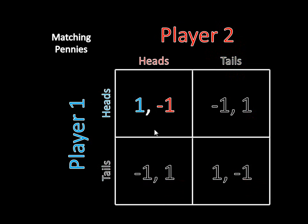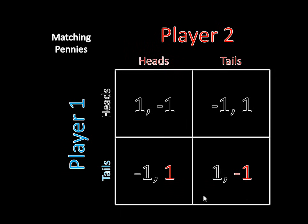Can heads-heads be a Nash Equilibrium? The answer is no. Consider Player 2's deviation: if Player 2 knows that Player 1 is playing heads, she doesn't want to play heads — she's going to want to switch over to tails. So this can't be a Nash Equilibrium. Can heads-tails be a Nash Equilibrium? No, for the opposite reason. Now Player 1 would want to switch his strategy, because if he knows that Player 2 is going to select tails, he's going to want to select tails as well to get the match. But then tails-tails can't be a Nash Equilibrium because Player 2 wants to switch — if she knows Player 1 is choosing tails, she wants to choose heads. And tails-heads can't be a Nash Equilibrium because if Player 1 knows Player 2 is playing heads, he's going to want to switch from tails to heads.